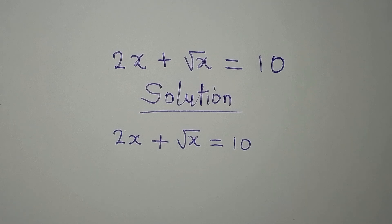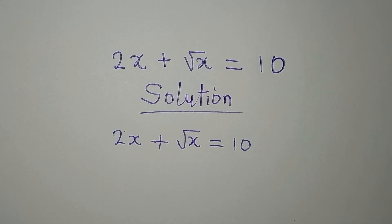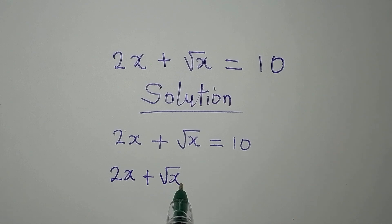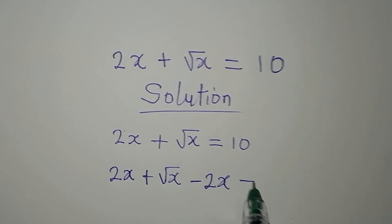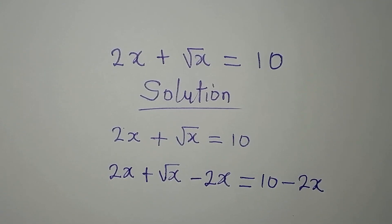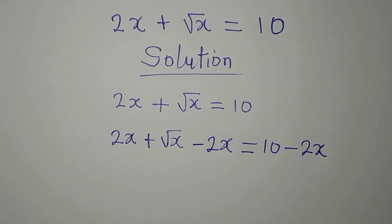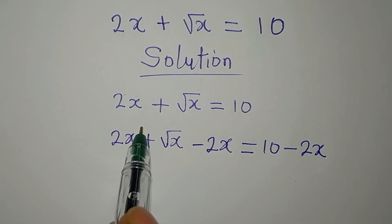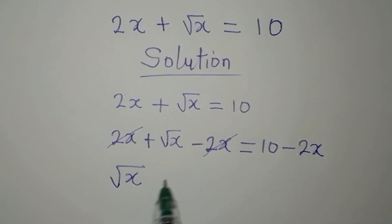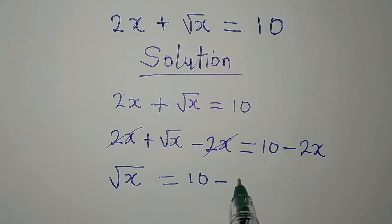The first thing is to make root x the subject. We do that by subtracting 2x from both sides. So on the left hand side, we have 2x plus square root of x, then minus 2x. And on the other side, we will have 10 minus 2x. This is because if you do the same thing on the two sides of an equation, you have not changed the equation. Now this and this can go — only this remains. We now have square root of x equal to 10 minus 2x.